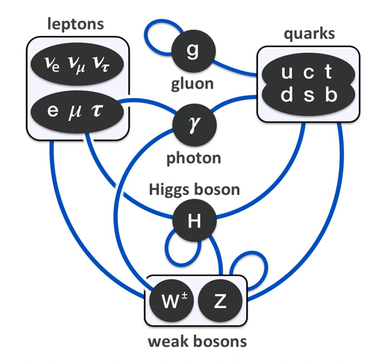In the Standard Model, gauge bosons are defined as force carriers that mediate the strong, weak, and electromagnetic fundamental interactions. Interactions in physics are the ways that particles influence other particles. At a macroscopic level, electromagnetism allows particles to interact via electric and magnetic fields, and gravitation allows particles with mass to attract one another in accordance with Einstein's theory of general relativity. The Standard Model explains such forces as resulting from matter particles exchanging other particles, generally referred to as force-mediating particles; when a force-mediating particle is exchanged, the effect is equivalent to a force influencing both particles.